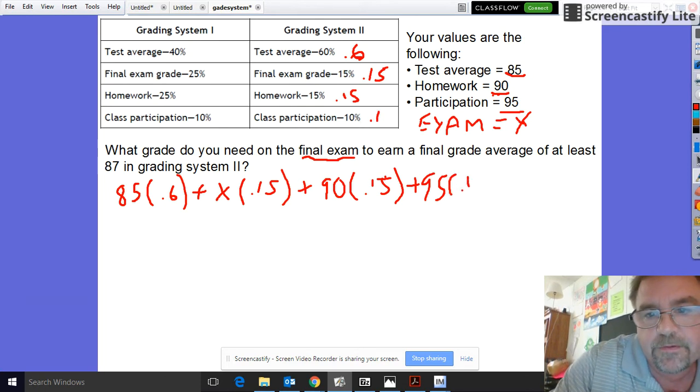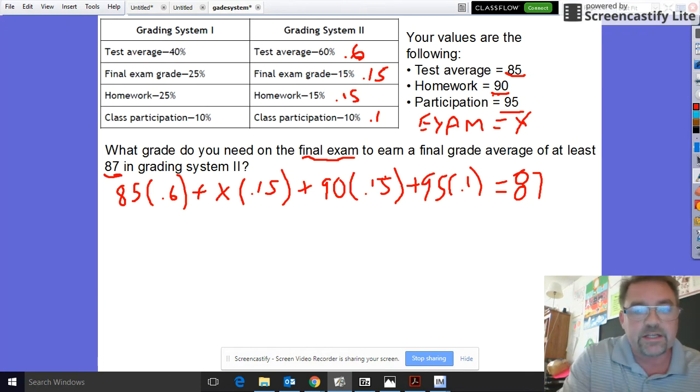Plus the next one which is participation, 95 times its percentage which is 0.1, and you want all that to equal 87. So basically you want to just solve for the missing value which would be your test grade right here.